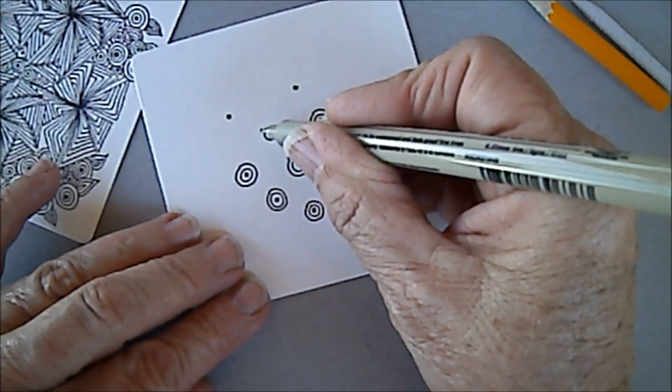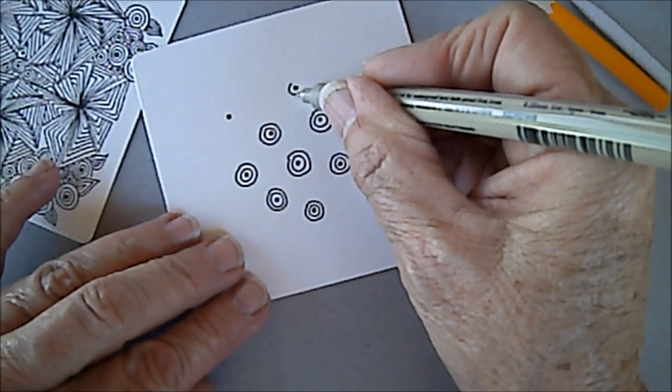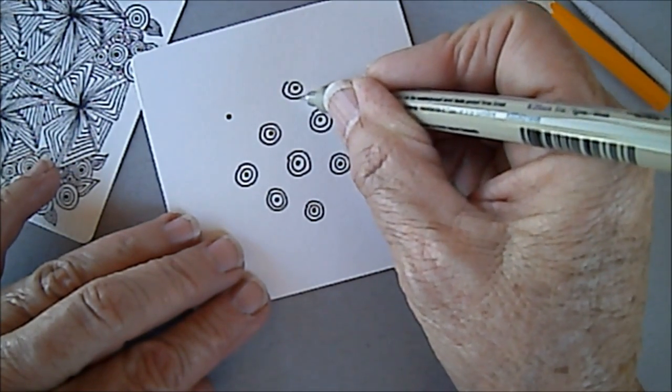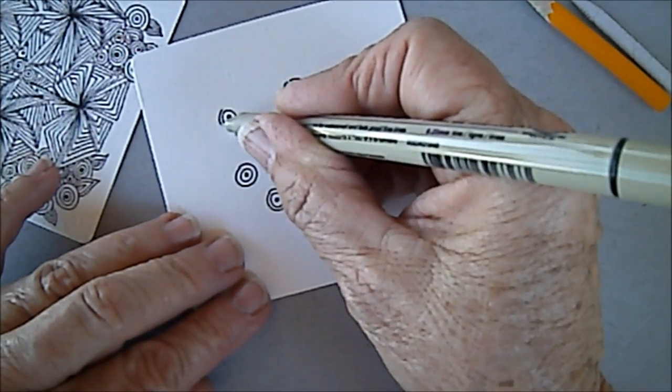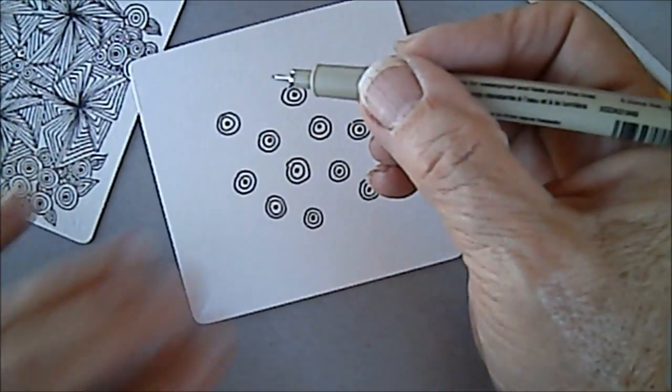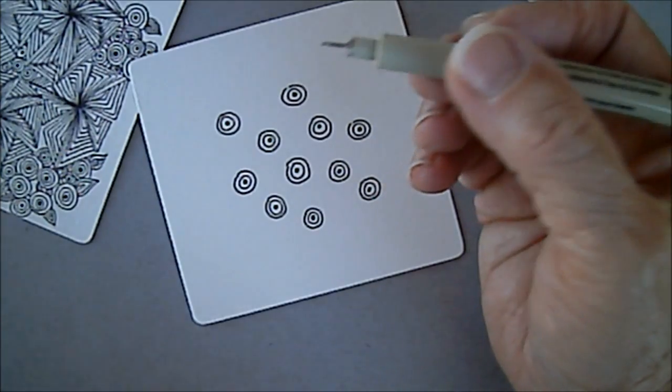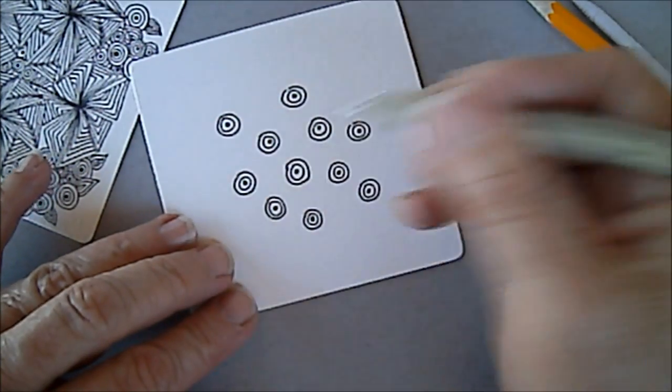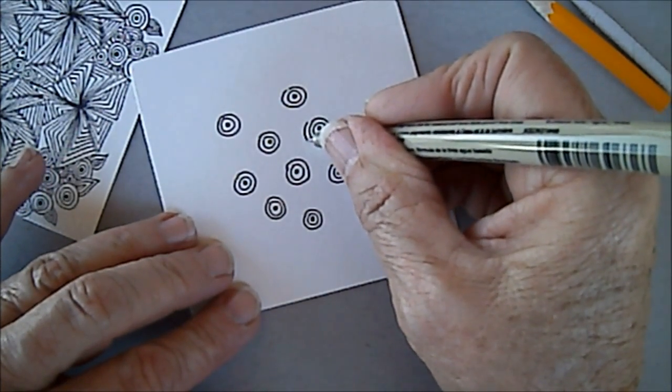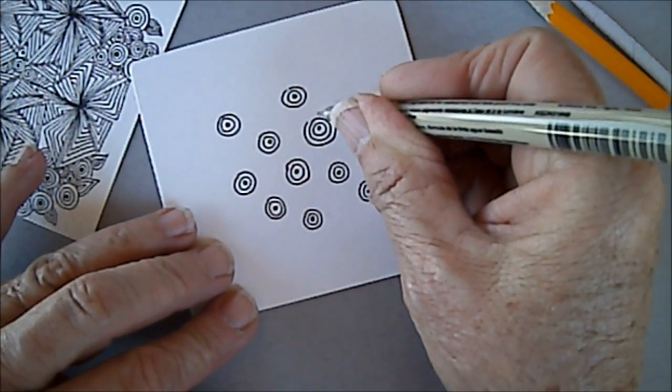Around each one of these dots I did, I'm putting two circles. You could put three or four if you wanted, but for right now I've just decided to do two. I may always go back and put three. That would just give us some different sizes.